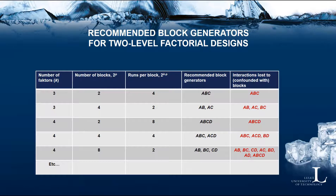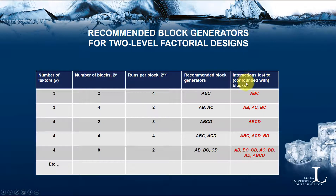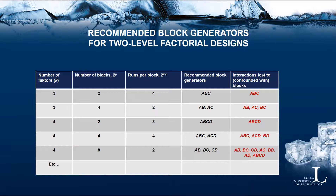In summary, here is a table with recommended block generators for two-level factorial designs, showing the number of factors, number of blocks needed, number of runs per block, the recommended block generators, and the interactions lost to blocks. These are not mandatory but are the recommended ones. When we have one block generator, one interaction is lost to blocks. With two block generators, three interactions are lost. With three block generators, as in the case of eight blocks, seven interaction effects are lost to blocks. This table is also available in the course book.